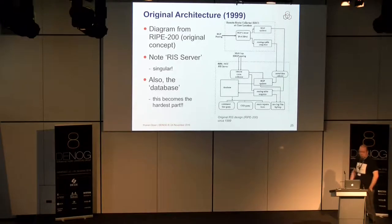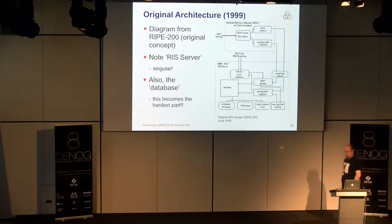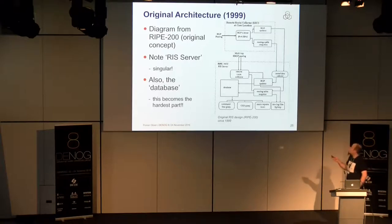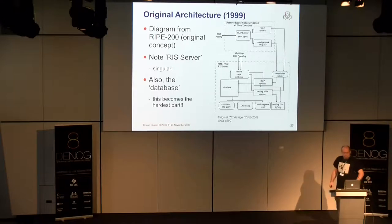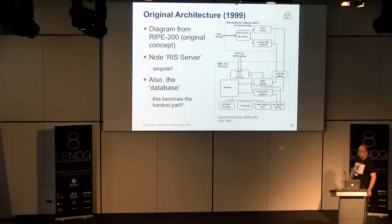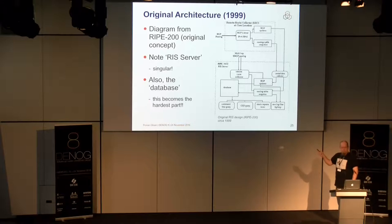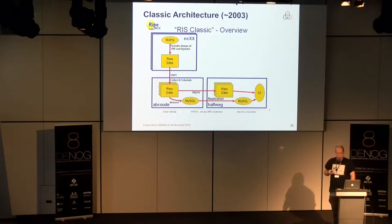A bit of history: a colleague did an internal presentation and it was actually quite funny. It started in 1999 with one RC and one RIS server in Amsterdam. In 1999, a full table was 60,000 routes, so this actually fit. It turns out the internet grows, and people figured out this was not really scaling.